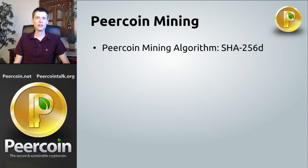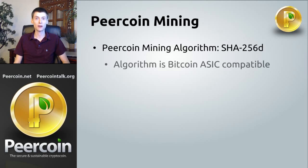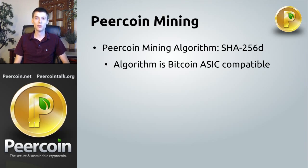The first thing you should know is the mining algorithm that's used on the network. It's called SHA-256D, but you don't need to memorize that. What you do need to know is that it's the same algorithm that Bitcoin uses on its network. This means that any Bitcoin mining equipment can simply be used on the Pure Coin network in order to mine Pure Coins. So if you want to get started with Pure Coin mining, you just have to purchase Bitcoin mining equipment and point it to the Pure Coin network.